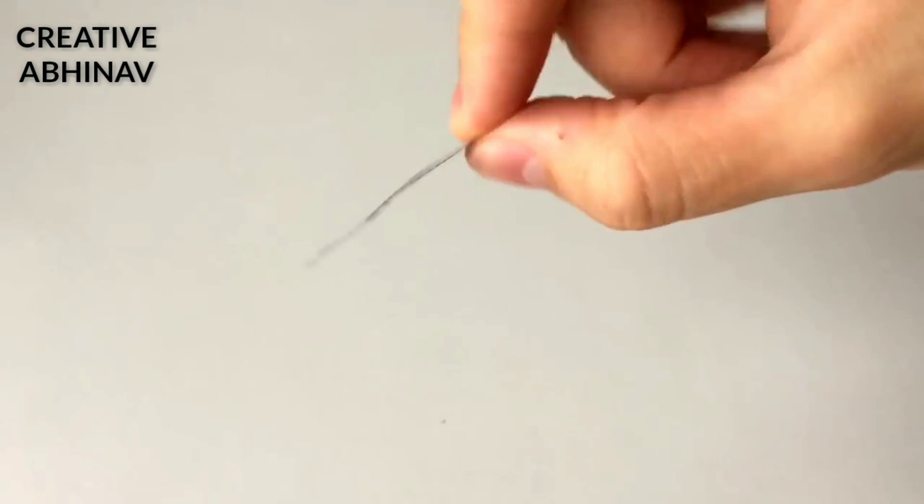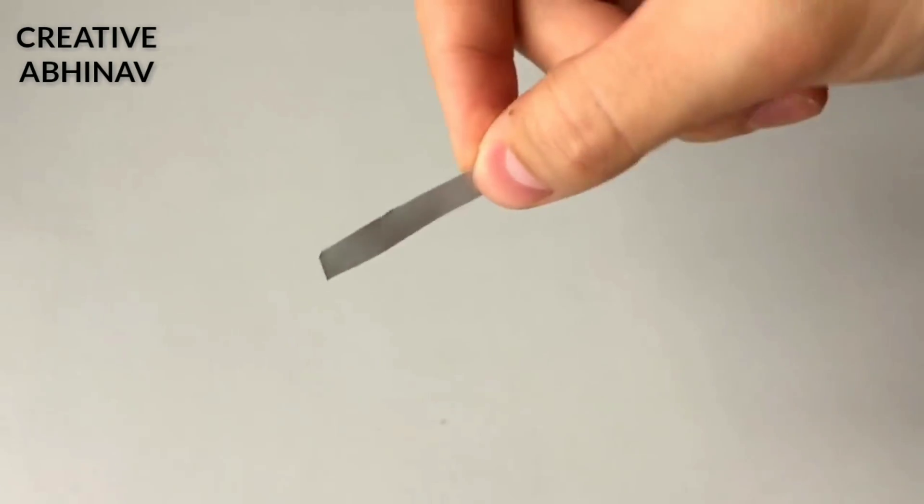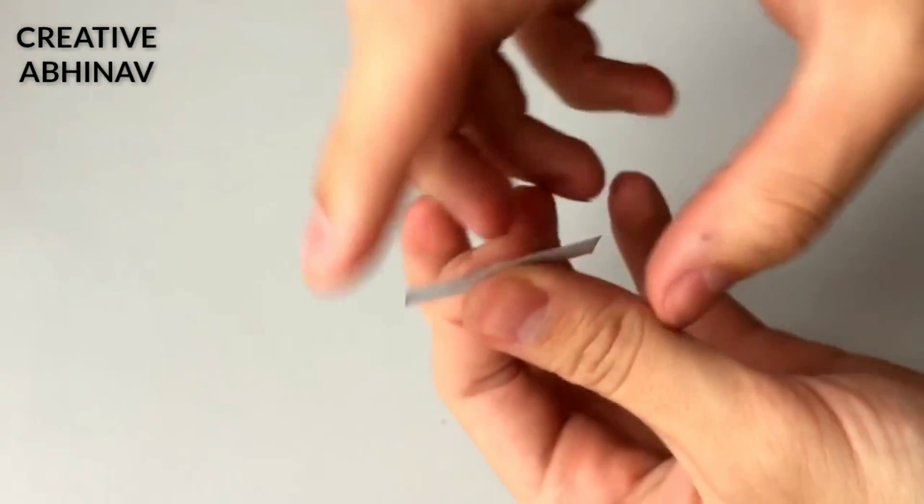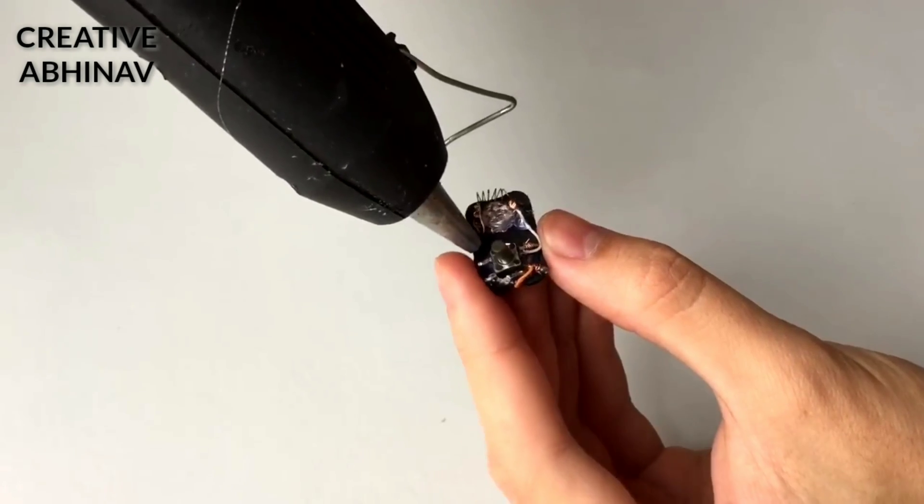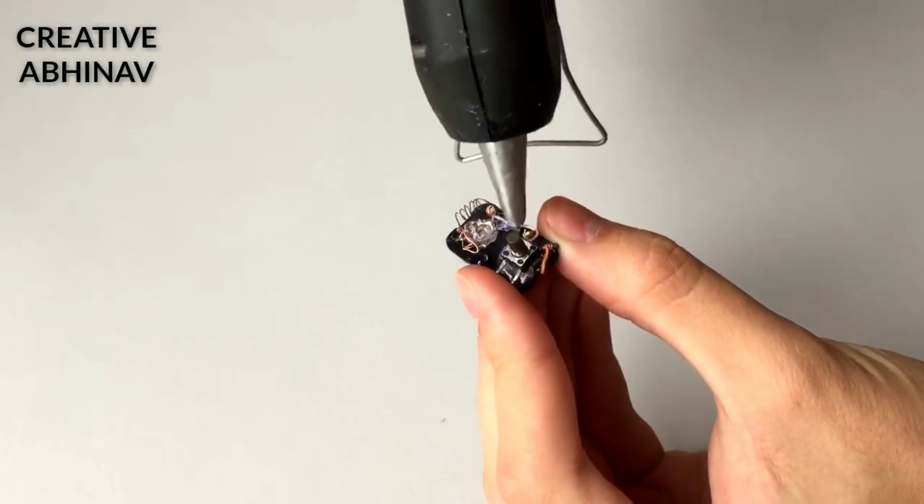Now take a piece of aluminum sheet, then we have to bend it like this. After bending it, we have to paste this on the 9-volt battery connector.